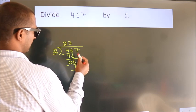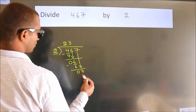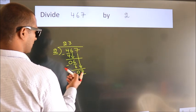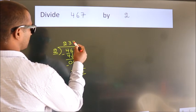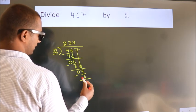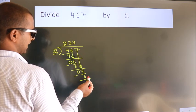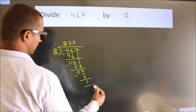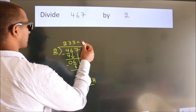After this, bring down the beside number. So, 7 down. A number close to 7 in 2 table is 2 times 3, 6. Now, we subtract. We get 1. No more numbers to bring down. So, we stop here. This is our remainder. This is our quotient.